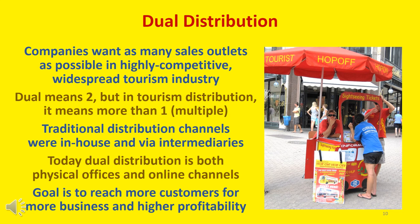Companies in every industry want as many effective sales outlets as possible, but it is especially important in such a highly competitive, widespread industry as tourism. Since tourists come from many places and search many sources during their travel planning and during their actual travels, it pays to have multiple distribution outlets and locations. The traditional term used is dual distribution. While dual means two, in tourism distribution think of it as meaning more than one, and indicative of how fast tourism has been expanding since its original channels that were in-house and via traditional intermediaries. Today, the simple divide for tourism's dual distribution is online and brick-and-mortar, but each of these has numerous possible outlets and they continue to grow. Reaching more customers through more channels means more business and higher profitability, especially when combined with modern revenue management techniques.